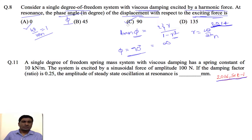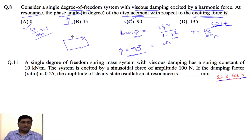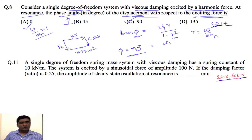At resonance, the force diagram becomes a rectangle. The displacement vector (kx) is perpendicular to the damping force (cxω), and the inertia force (mxω²) balances with the spring force. The external exciting force F₀ acts in a specific direction. For further details, please refer to the previous video lecture.